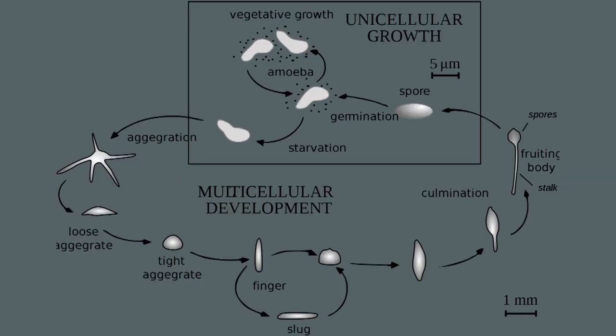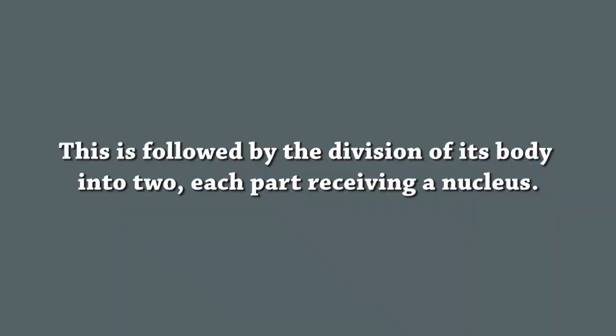In amoeba, the process begins with division of its nucleus into two nuclei — this is called karyokinesis, where 'karyo' means nucleus and 'kinesis' means division. This is followed by division of its body into two, each part receiving a nucleus, which is called cytokinesis. Finally, two daughter amoeba are produced from one parent amoeba. If this division continues, the resultant daughter amoeba are all products of one parent and are referred to as clones, as they all carry the same genetic makeup of that one parent.